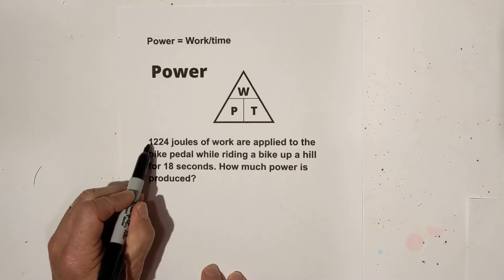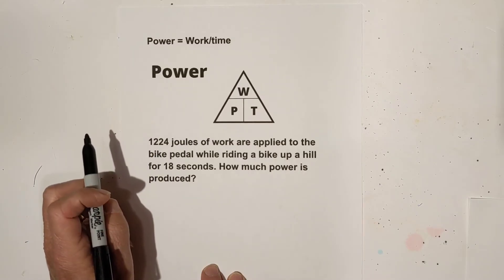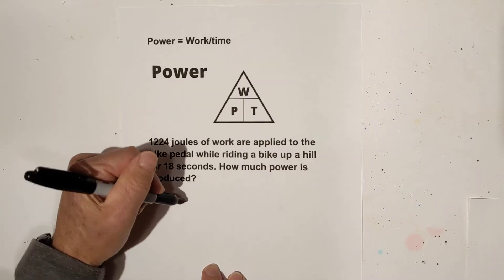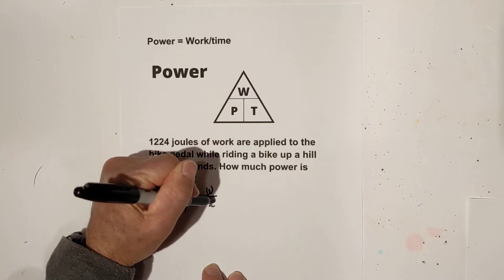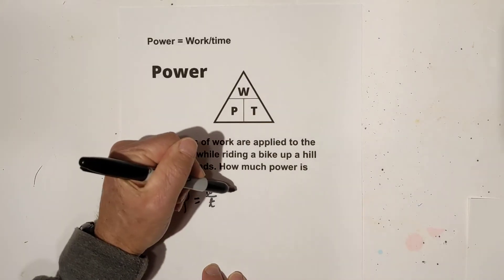We have 1,224 joules of work are applied to the bike pedal while riding a bike up a hill for 18 seconds. How much power is produced? Remember, power is work over time. So now let's start plugging in some numbers.